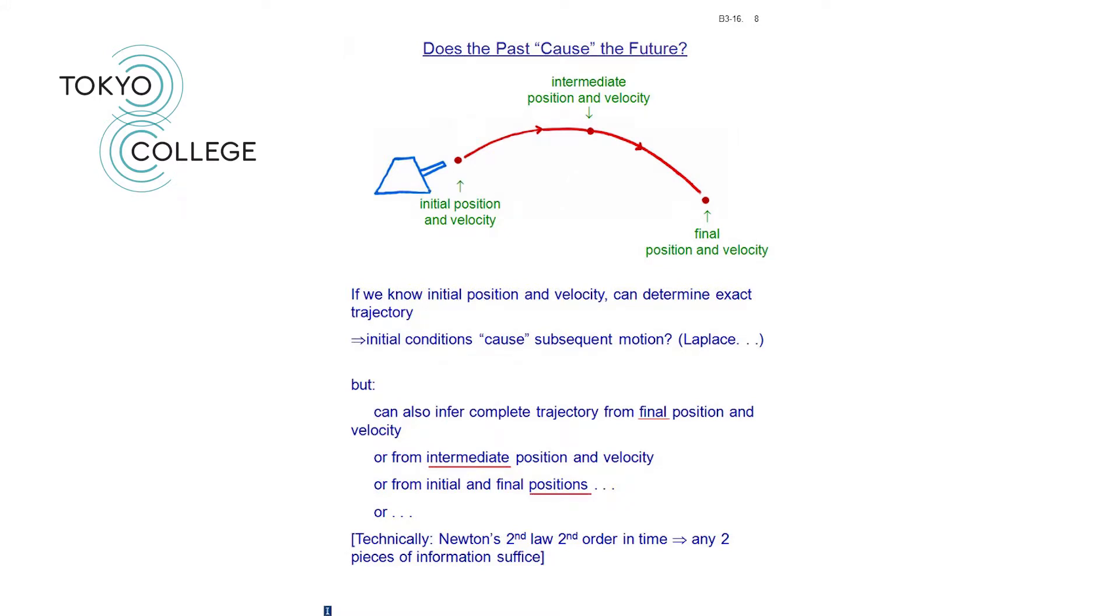Now, associated with this, another question. Is it correct, in terms of basic physics, to say that the past causes the future? At first sight, well, yes. Here's a standard textbook problem in elementary mechanics. You have a cannon here, which is going to fire a cannonball. And what the textbook will tell you, possibly, is the initial position and velocity of the cannonball. And then it will ask you to calculate the trajectory, the motion of the cannonball, and perhaps to decide where it comes out, where it lands. And so, if we know the initial position and velocity, we can determine the exact trajectory.